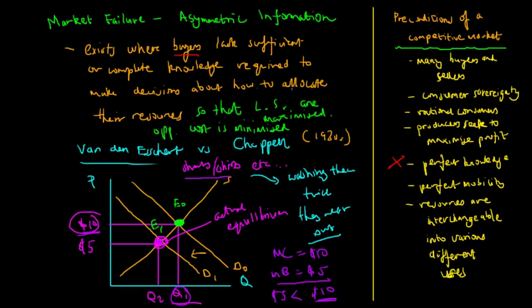To recap, asymmetric information causes buyers to allocate resources inefficiently because buyers have imperfect knowledge. This causes resources to be inefficiently allocated to non-productive uses, whereas they should be allocated to productive uses so that resources are efficiently utilized, living standards are maximized, and opportunity cost is minimized.